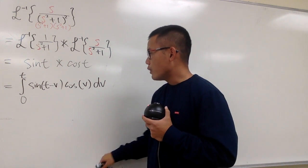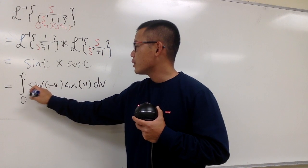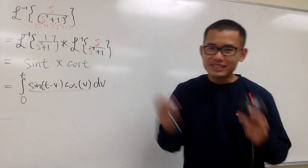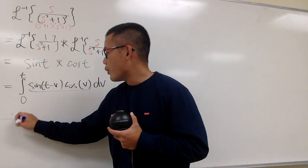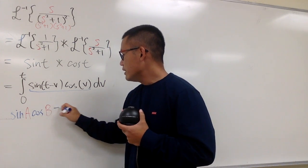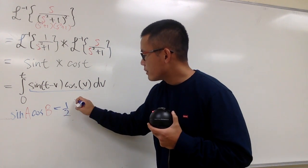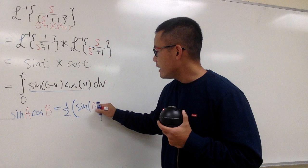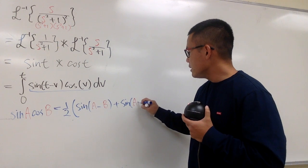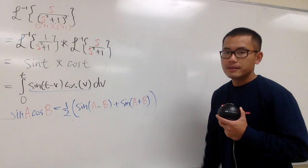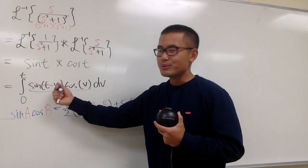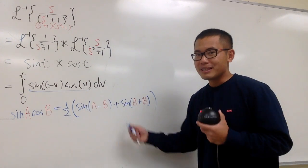We have a product of sine and cosine, and the angles are not the same, so we have to use the product-to-sum formula. Let me write this down: whenever we have sine of an angle times cosine of another angle, this is going to be 1/2 times sine(a − b) plus sine(a + b). If you use this formula, the integration part will be pretty easy. Otherwise, you would have to try integration by parts — just use this.